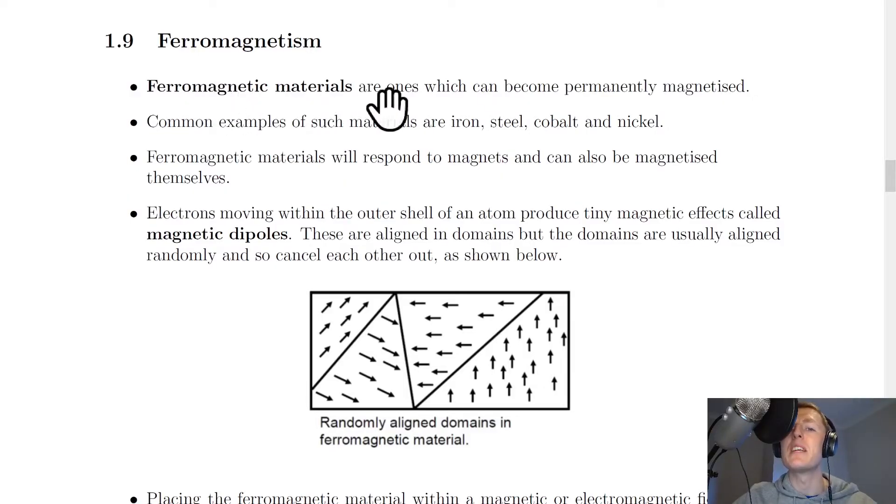Ferromagnetic materials are ones which can become permanently magnetised. Common examples of such materials are iron, steel, cobalt and nickel.